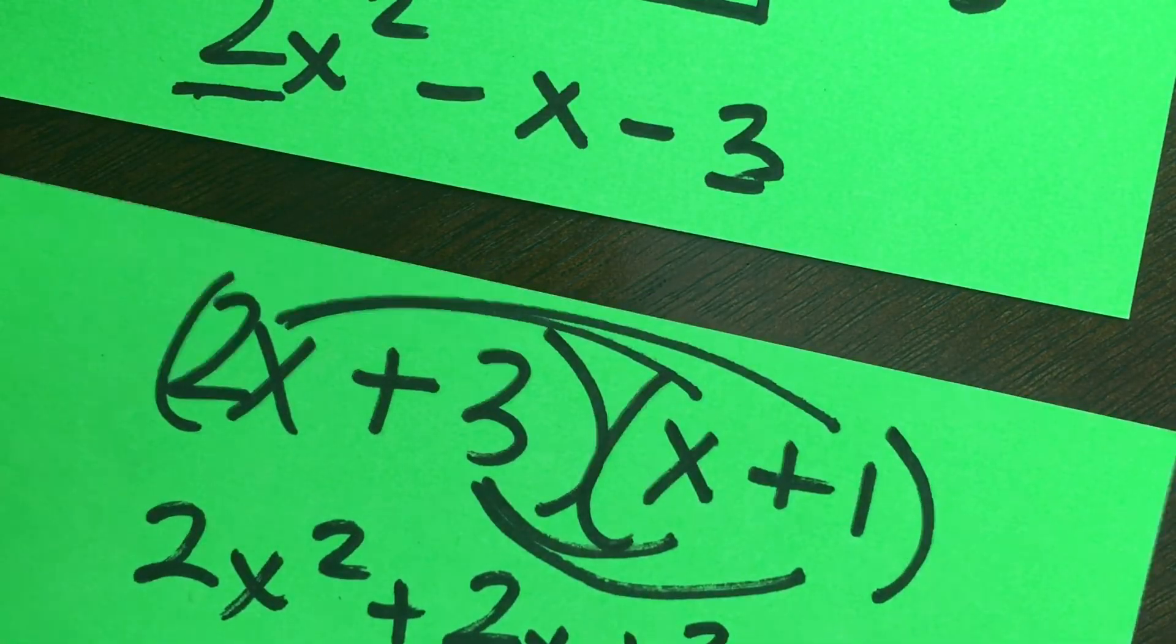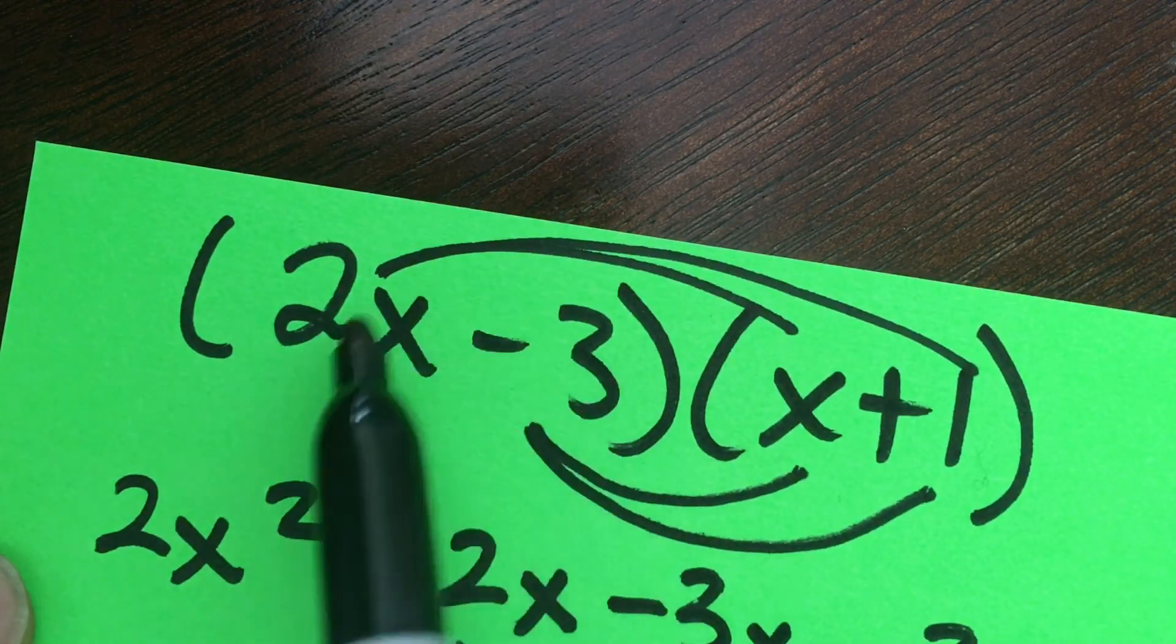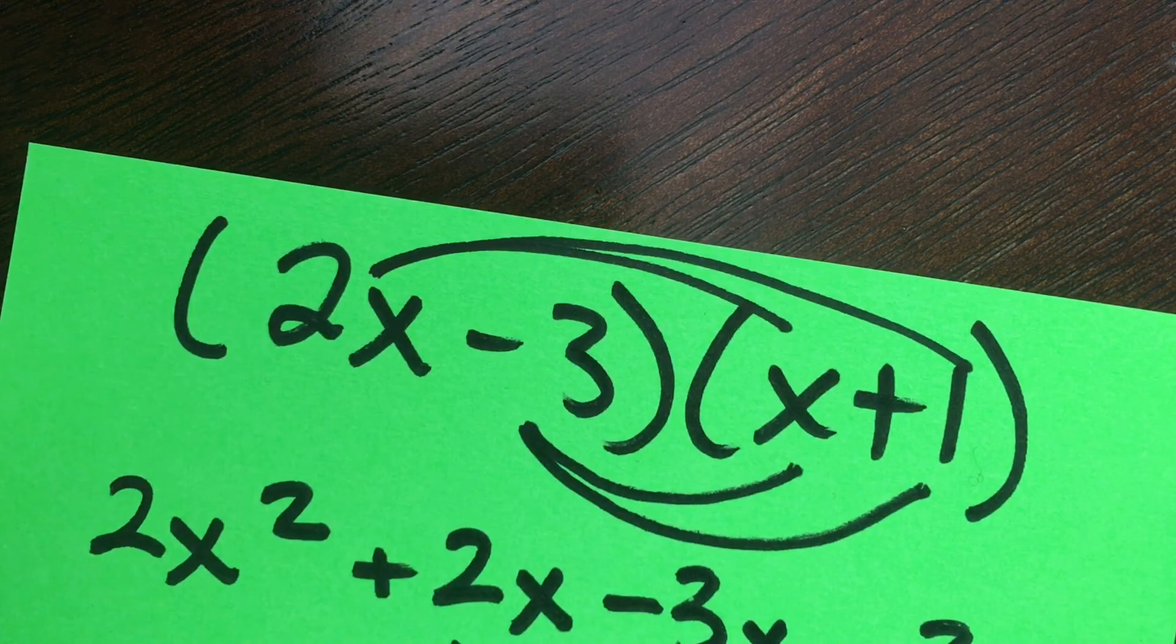So that is how you can do distribution for binomials where there's a coefficient in front of the x.